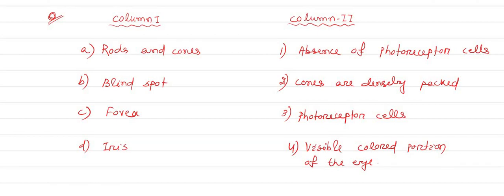Here, rods and cones - you know that rod and cone cells are responsible for color vision and vision in dim light. They are the photoreceptor cells. Option A matches with 3, these are photoreceptor cells. Next, blind spot.